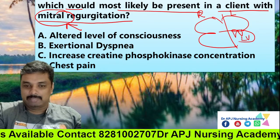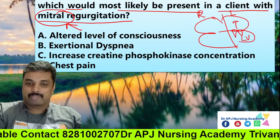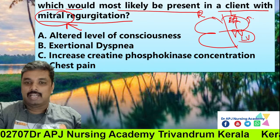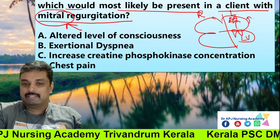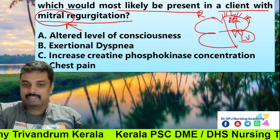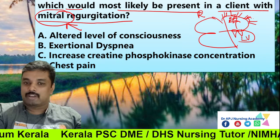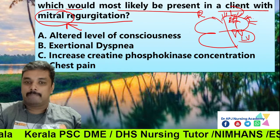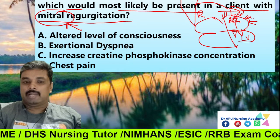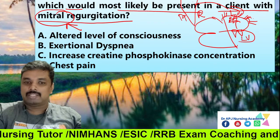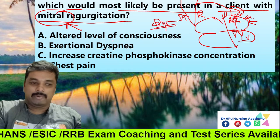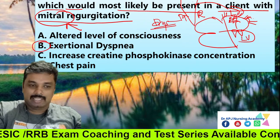There is blood in the left ventricle. It moves through 4 pulmonary veins. There is a problem leading to pulmonary edema and dyspnea. The correct answer is exertional dyspnea.